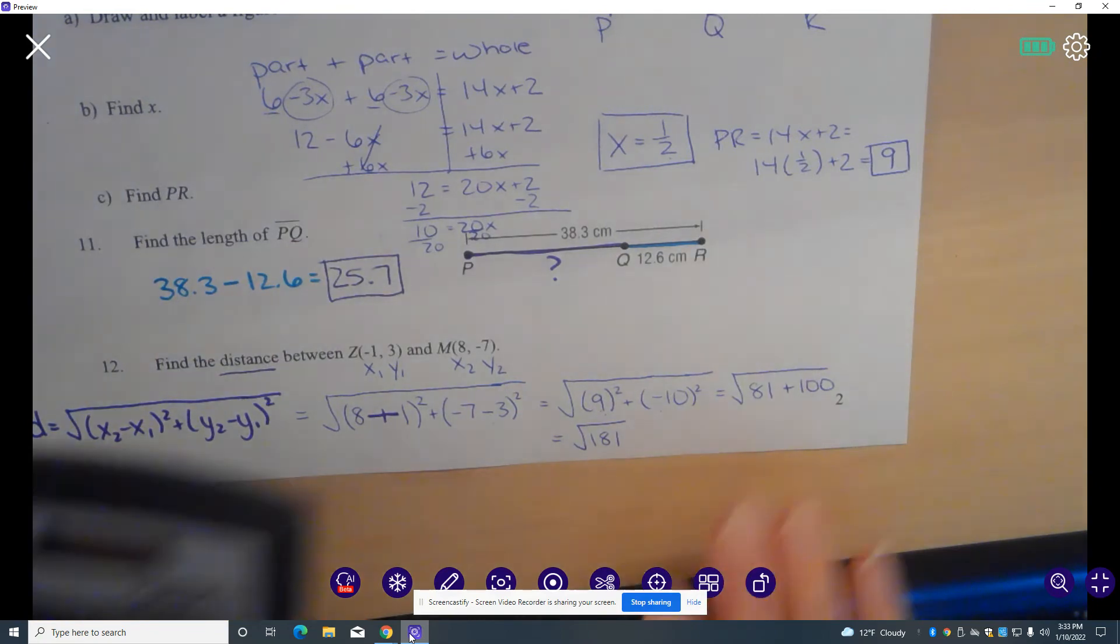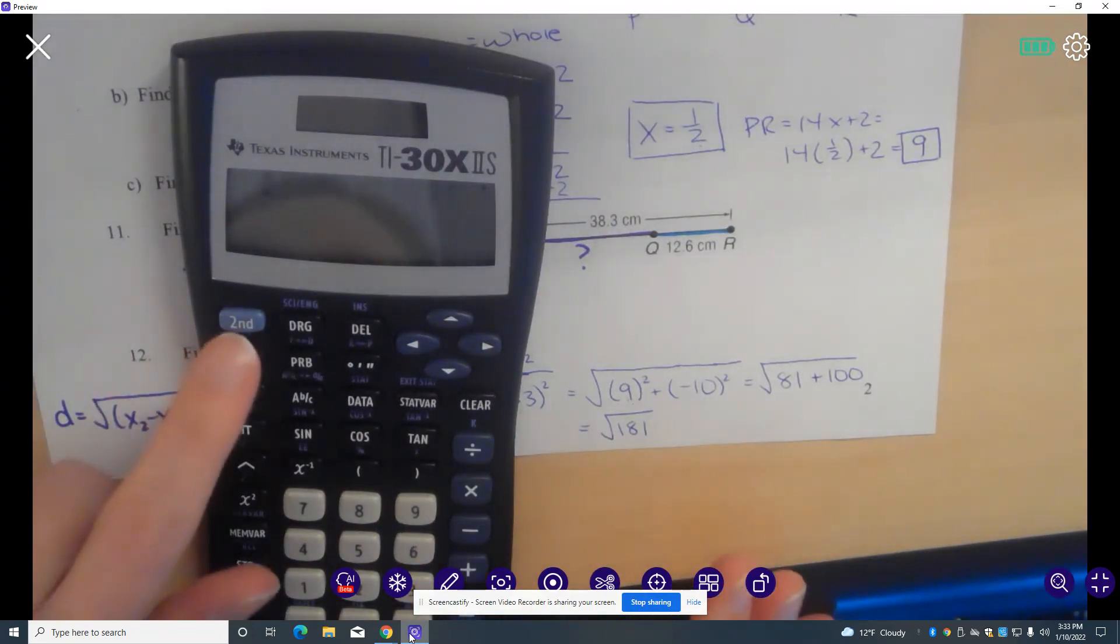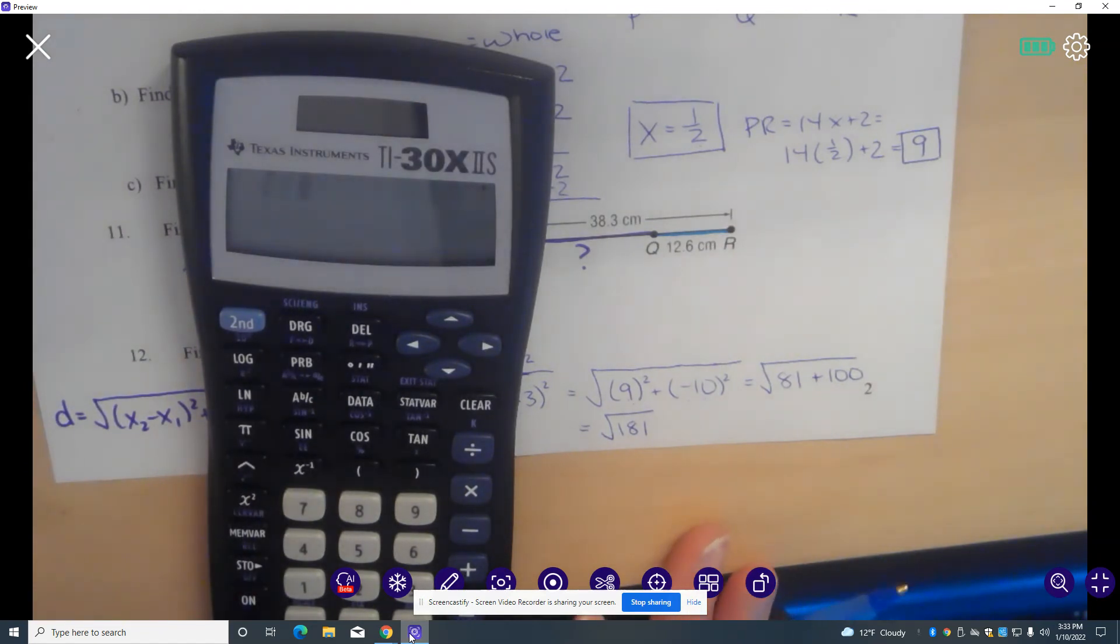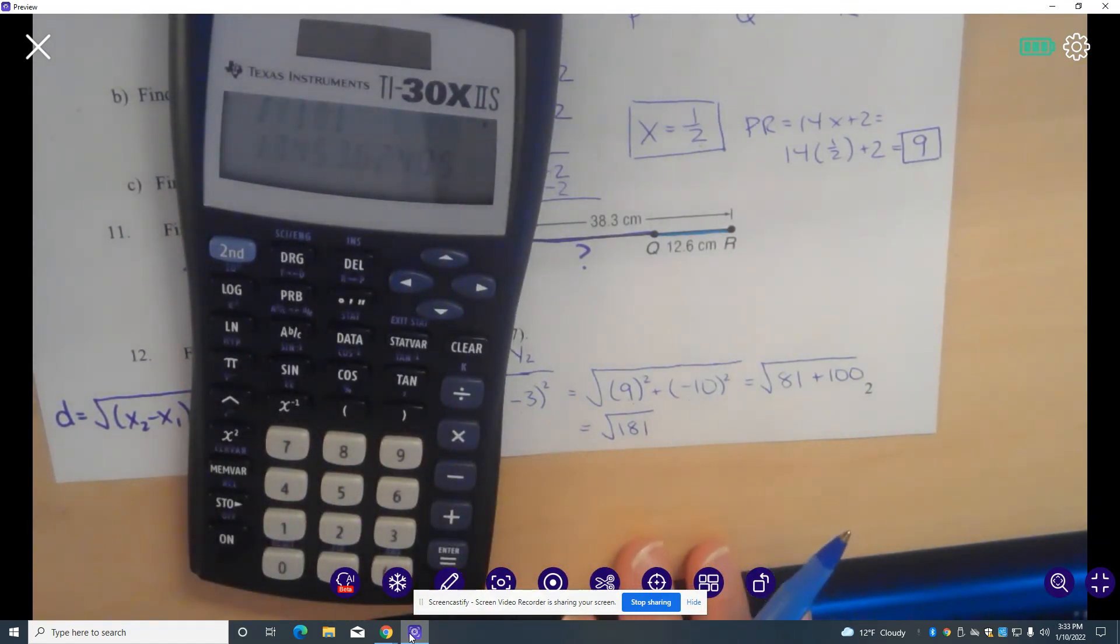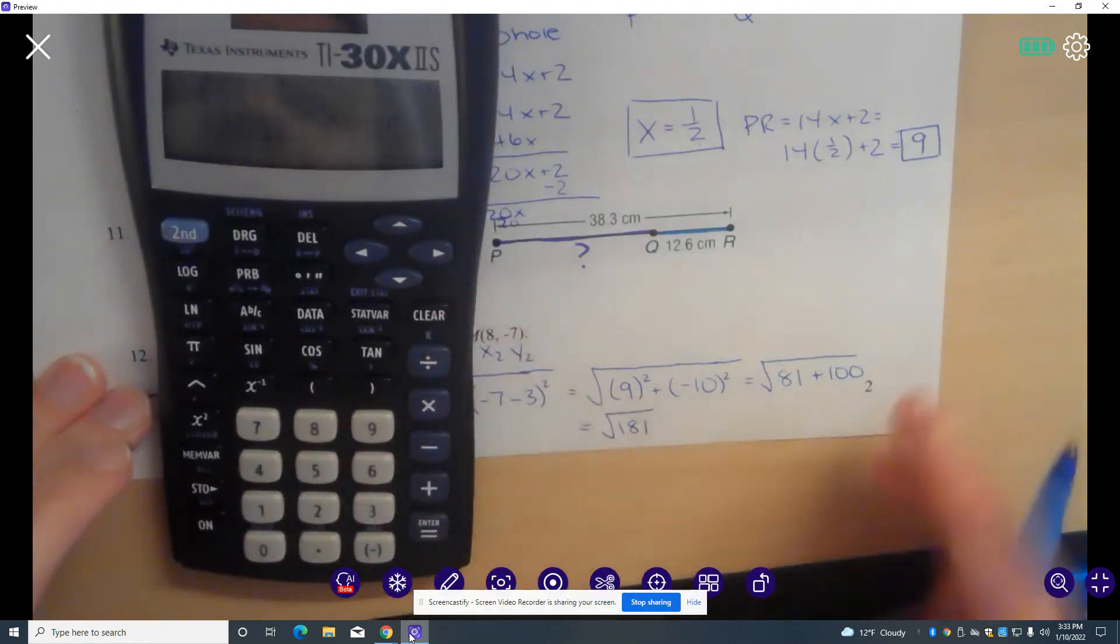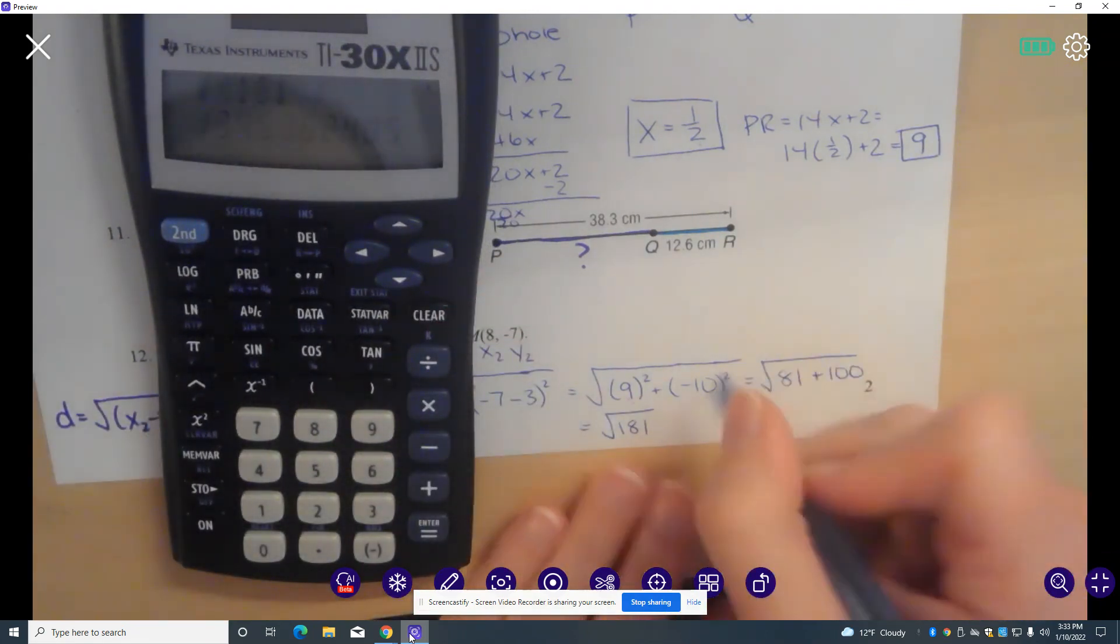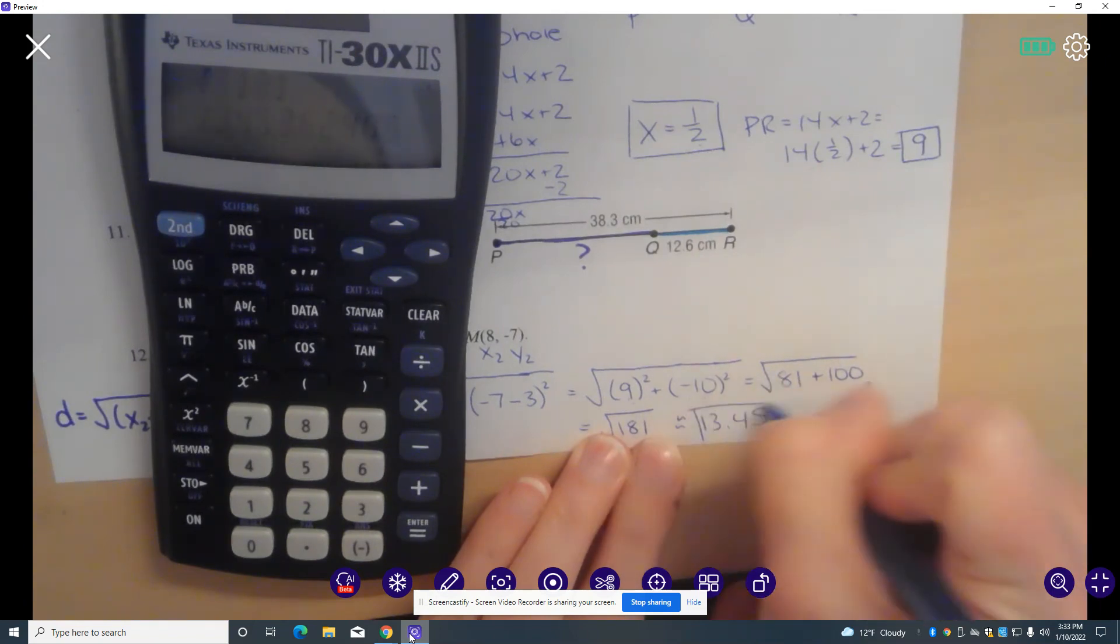And I'm going to take the square root on my calculator. So to remind you how to do that, remember we're going to hit the second key. And then we're going to hit the X squared button to get our square root symbol. And I'm going to type in 181. They don't tell us what place value to round to. So it's kind of hard to see. This says 13.45. I'll round to the hundredths place.